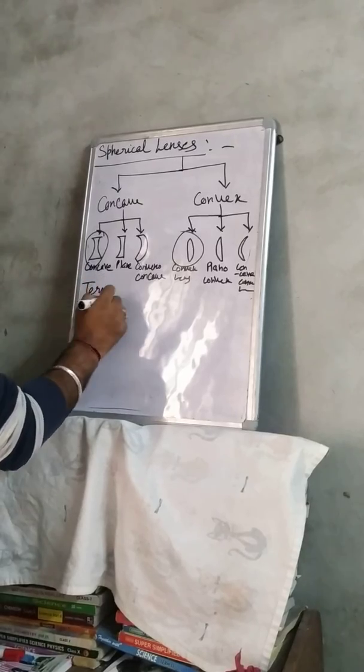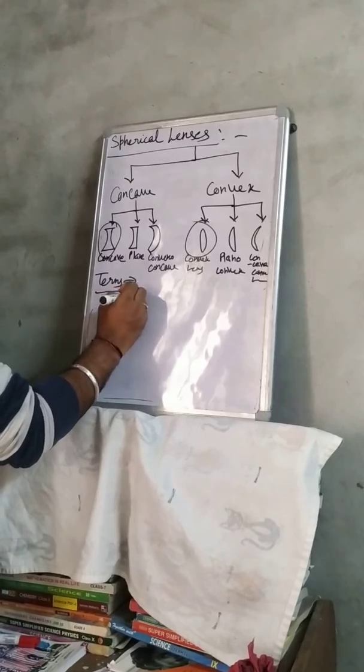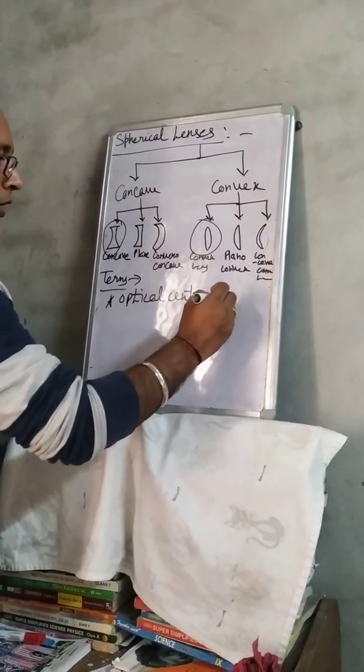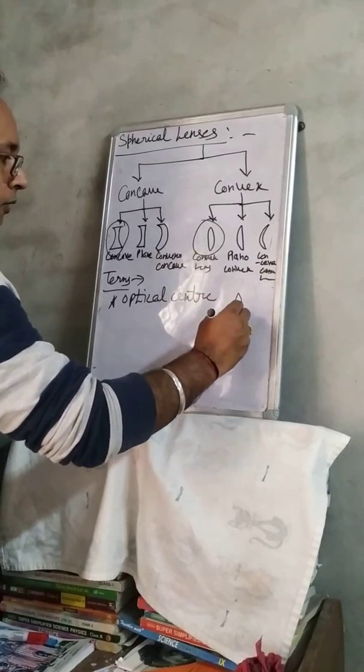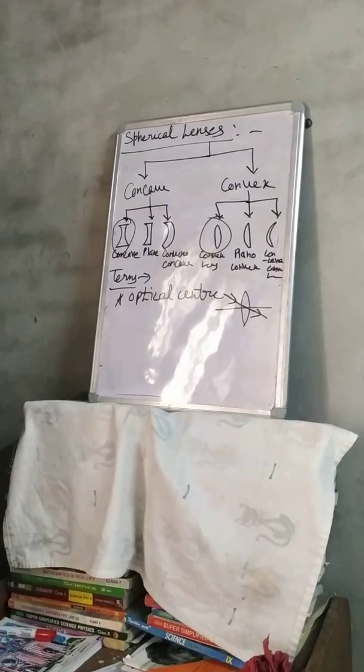Basically, we will discuss these concave and convex and the terms related to these. All the terms are principal lenses. One new term will be the optical center.